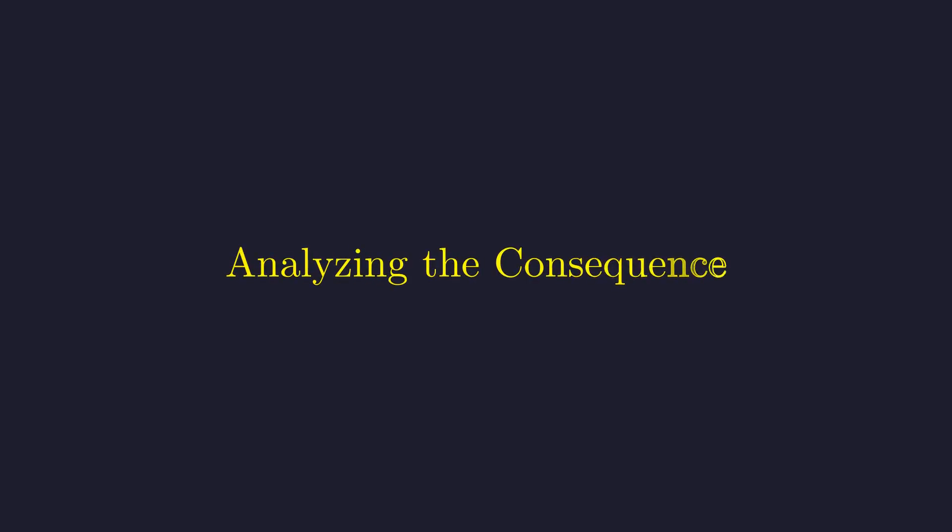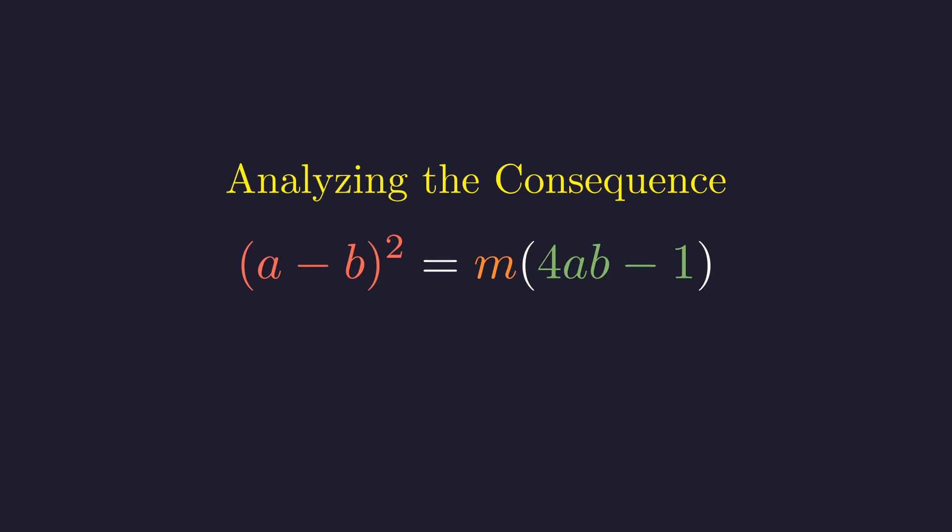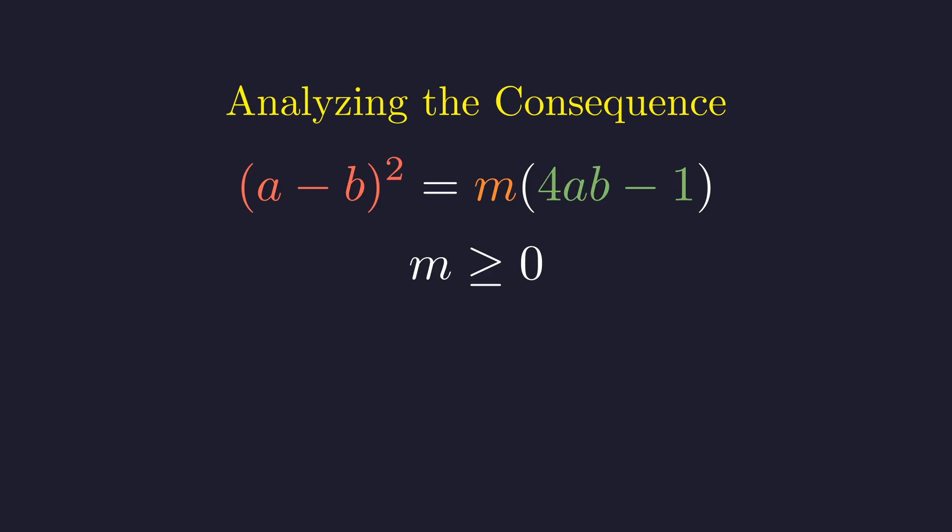Having confirmed our transformation, we now analyze its implications. By definition of divisibility, there must exist an integer M such that this equation holds. Observe the signs of these terms. The left side is a square, so it is non-negative. The term 4 times A times B minus 1 is positive as A and B are positive integers. Consequently, M must be a non-negative integer. This leaves two possibilities to investigate: the case where M equals 0 and the case where M is strictly positive.